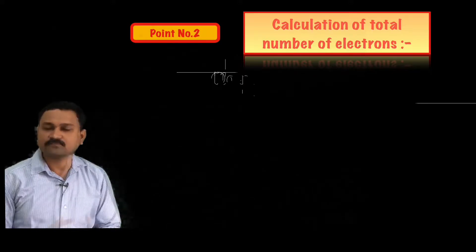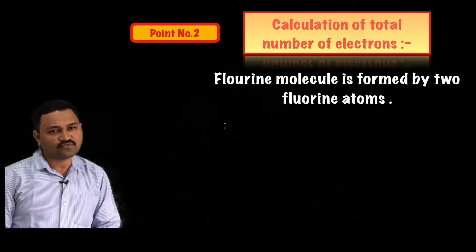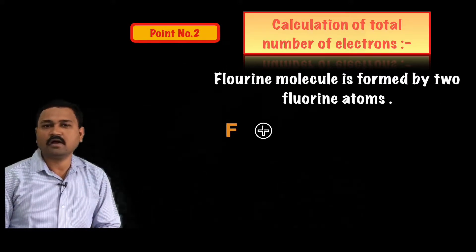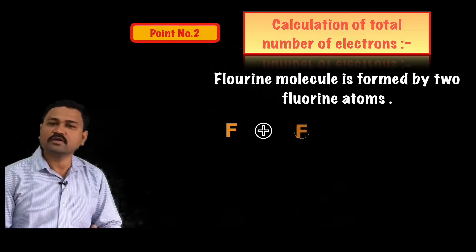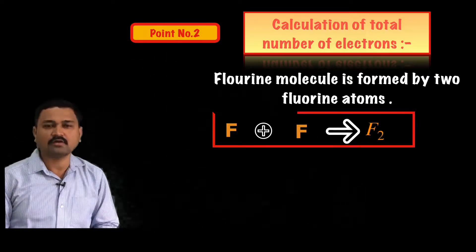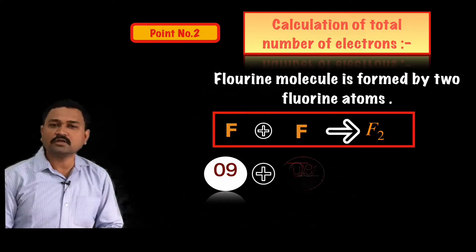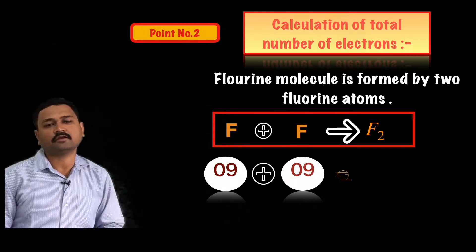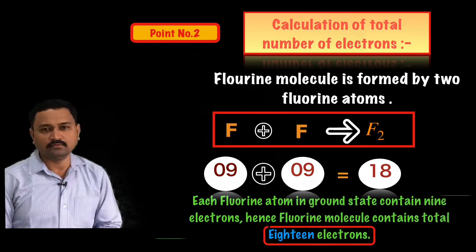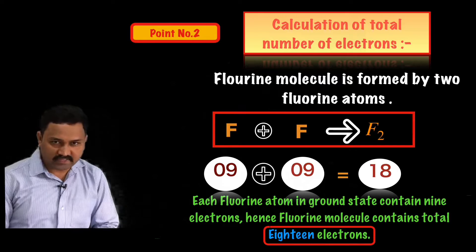Point number two: the calculation of the total number of electrons. The fluorine molecule is formed by two fluorine atoms and each fluorine atom contains nine electrons, hence the total number of electrons in the fluorine molecule is 18.